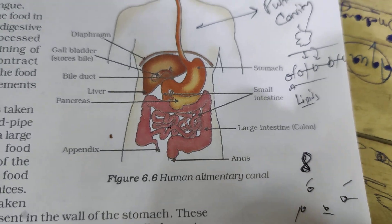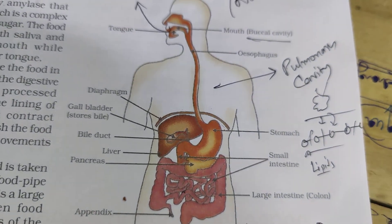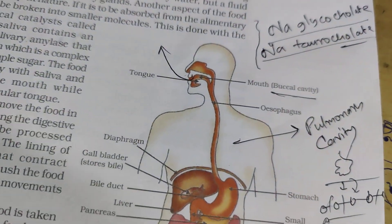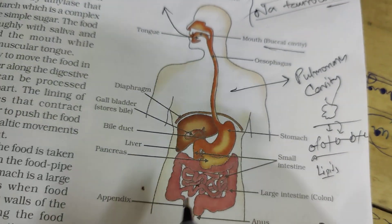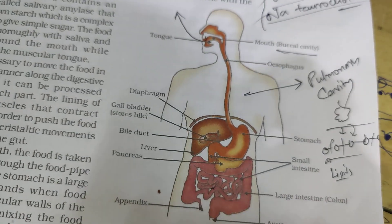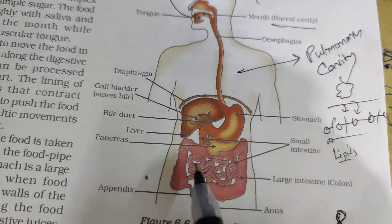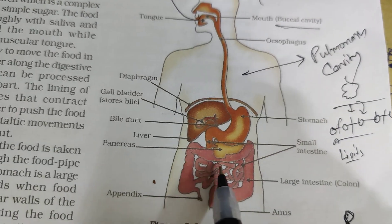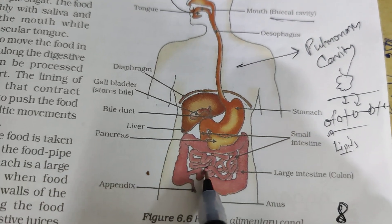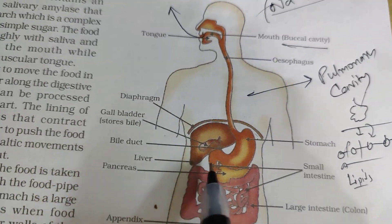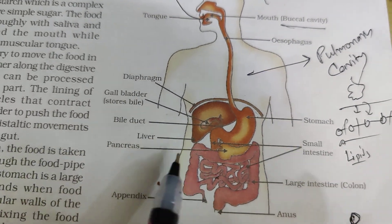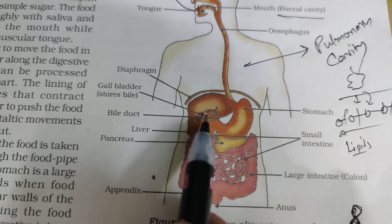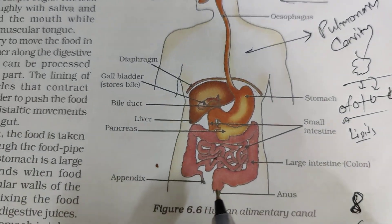Sodium glycocolate and sodium taurocholate are names of chemicals that you will study in detail in Class 12. Now, in the intestine, a lot of digestion is going on. For fat digestion, emulsification is important. The bile juice comes from the bile duct, and bile juice gets stored in the gallbladder. Is this clear?